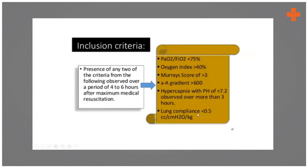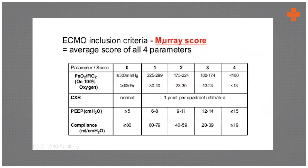The Murray Score takes into account the PaO2/FiO2 ratio, the chest X-ray, the PEEP, and the compliance. A score of two to three corresponds to approximately 50% mortality, and greater than three corresponds to approximately 80% mortality. At 80% mortality, we definitely want to put the patient on ECMO.